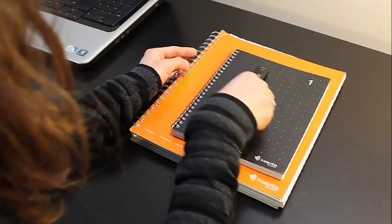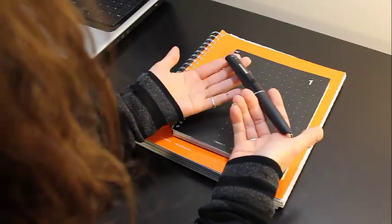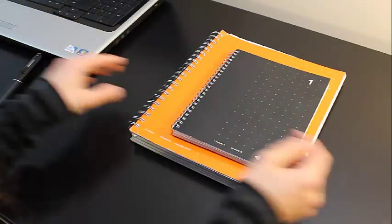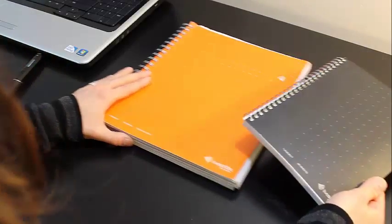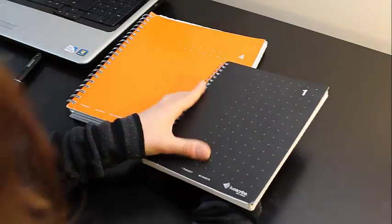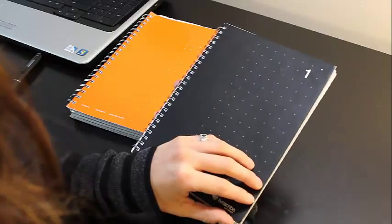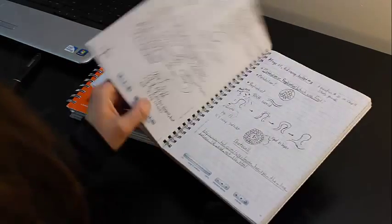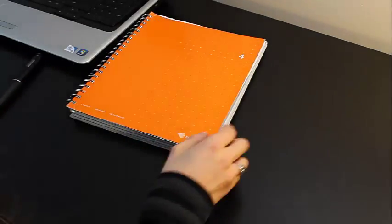Now the materials that you need at a minimum are your Livescribe pen. I use an Echo, but any model works just fine. You need Livescribe paper, and you have a few options here. You can buy notebooks that are filled with the paper. I think every pen comes with a starter notebook that is about 5.8 by 8.3 inches.